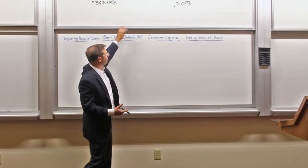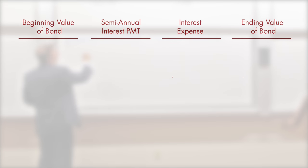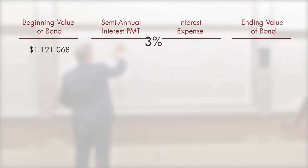To do that, we start out with our chart. The beginning value of the bond, we just copied from the present value, $1,121,068. The semi-annual interest, this is again based upon the coupon rate. This is the cash that's going to go out the door. That is our million dollars times our 6% times one-half, $30,000 semi-annual cash will go out the door.